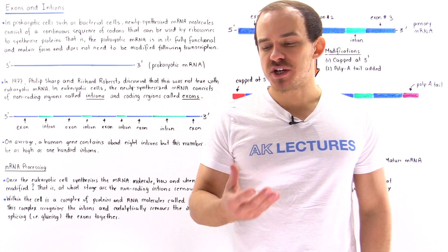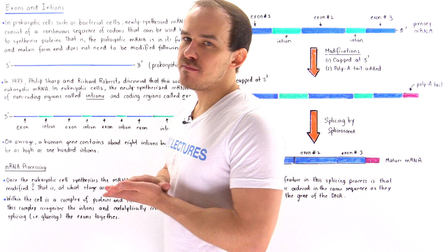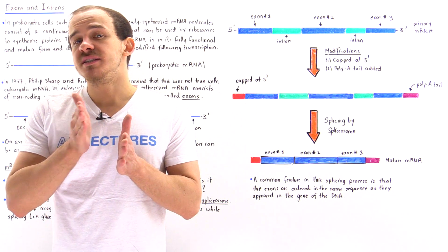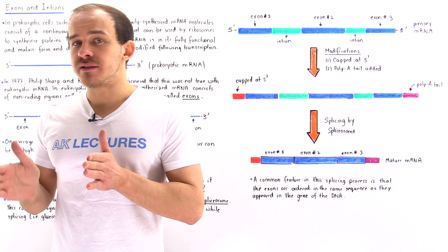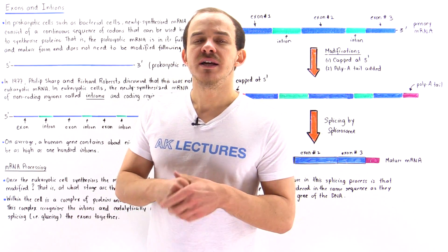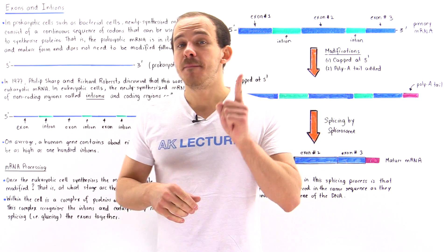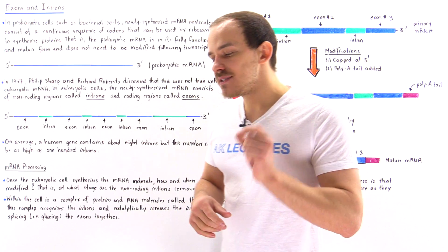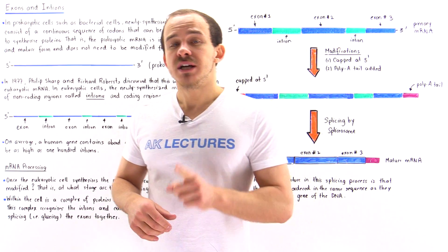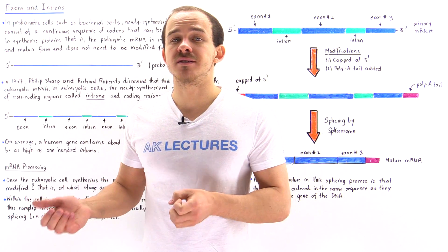In prokaryotic cells, such as bacterial cells, once we synthesize the mRNA molecule, that mRNA molecule will consist of a continuous sequence of codons that can be used by the ribosomes of that bacterial cell to synthesize a given polypeptide chain. In fact, because of this, because the mRNA molecule in prokaryotic cells does not have to be modified in any way following the process of transcription,